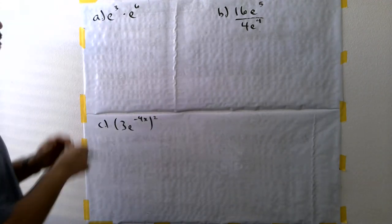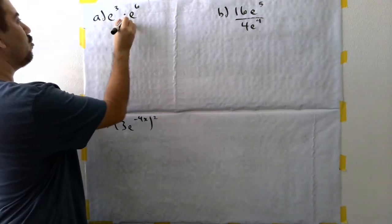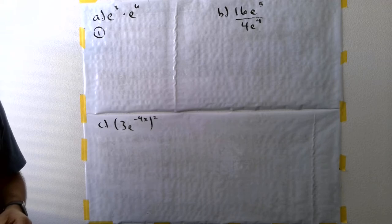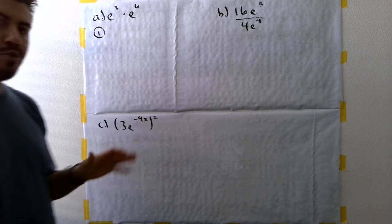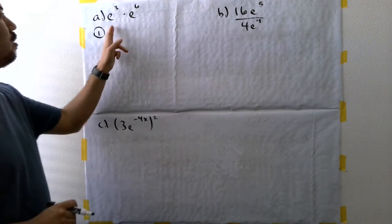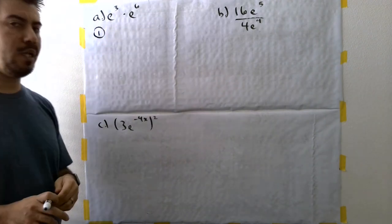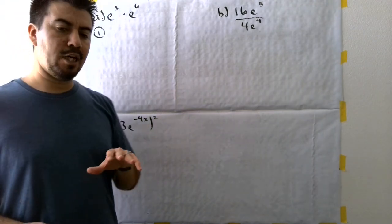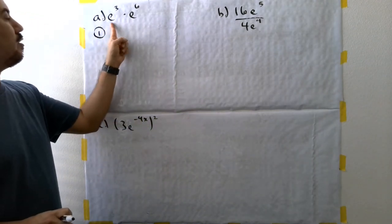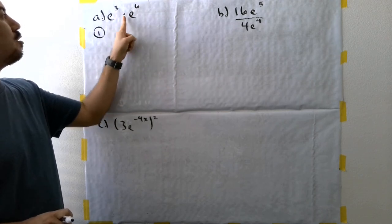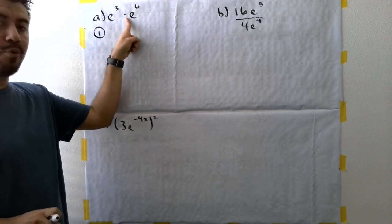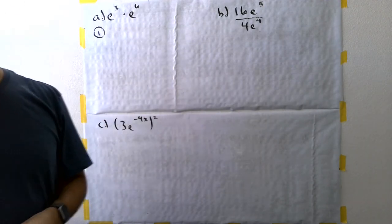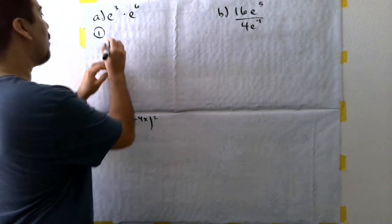There are only three steps. For problem A, we have e cubed times e to the sixth power. Step one says to identify the property of exponents which applies to this problem. On that same page, you have all the properties of exponents. You're going to look and see which one applies — where you have the same base, different exponents, separated by multiplication. The property that applies here is the product of powers property.